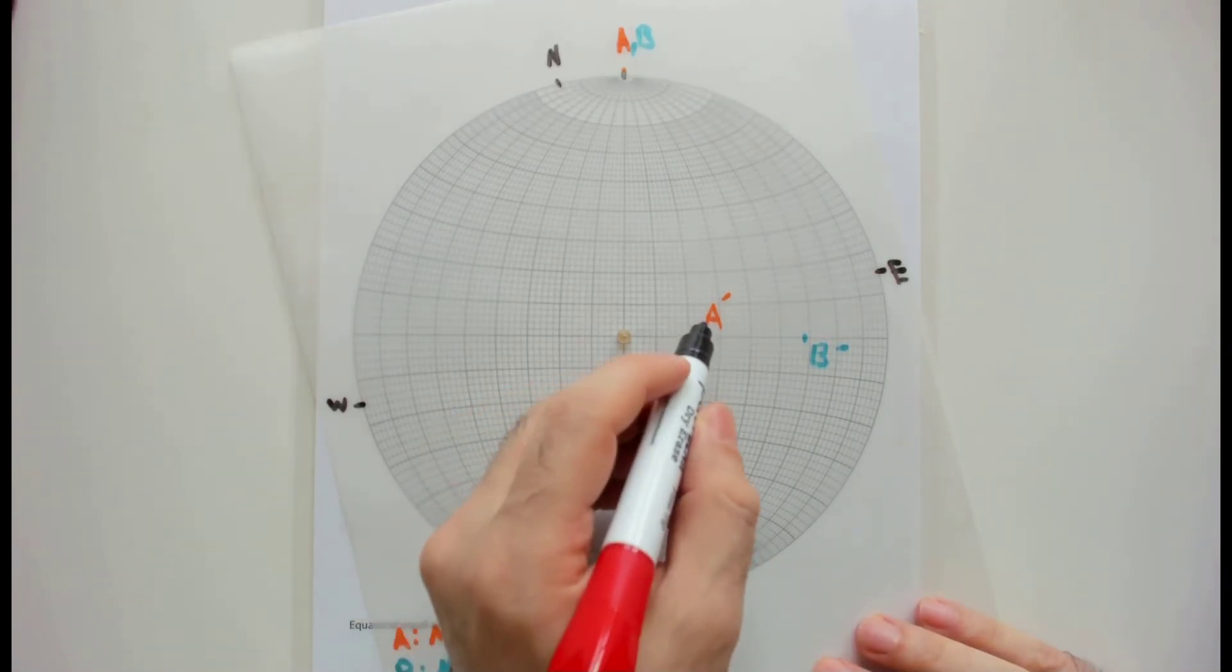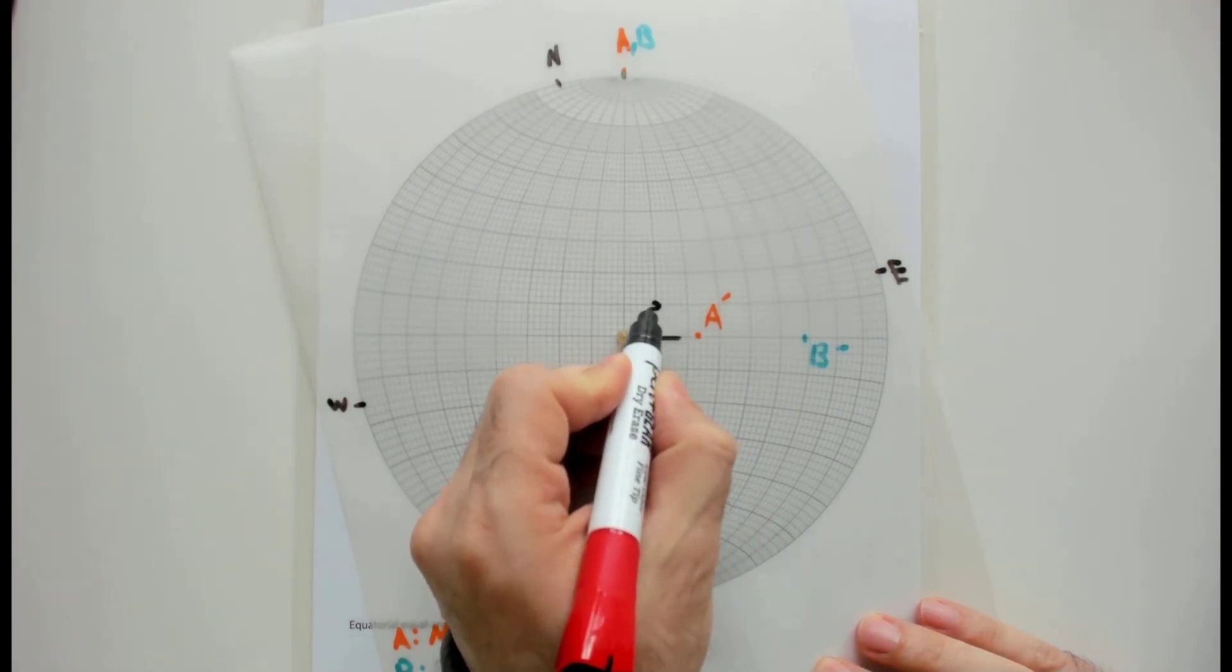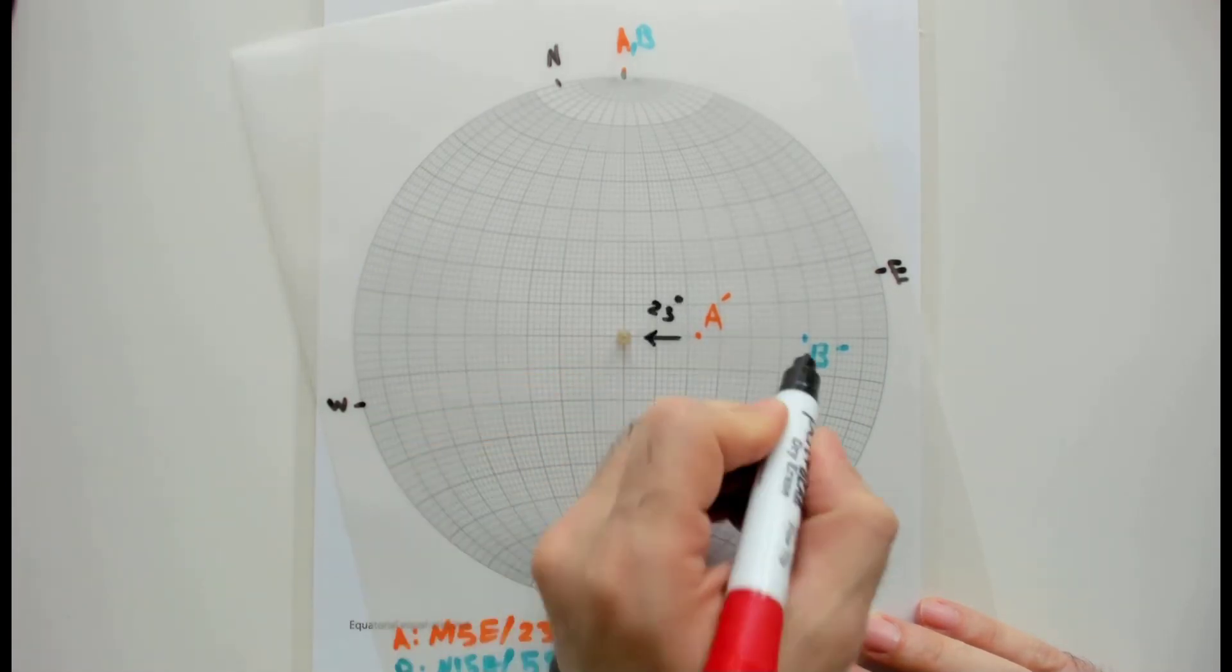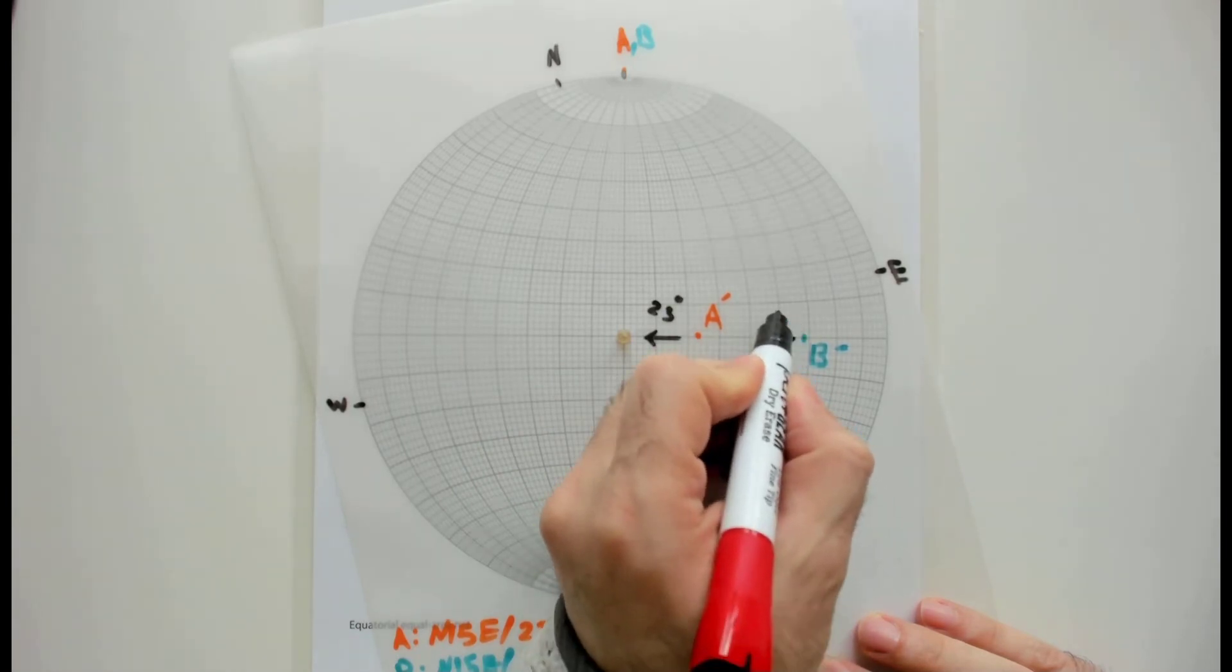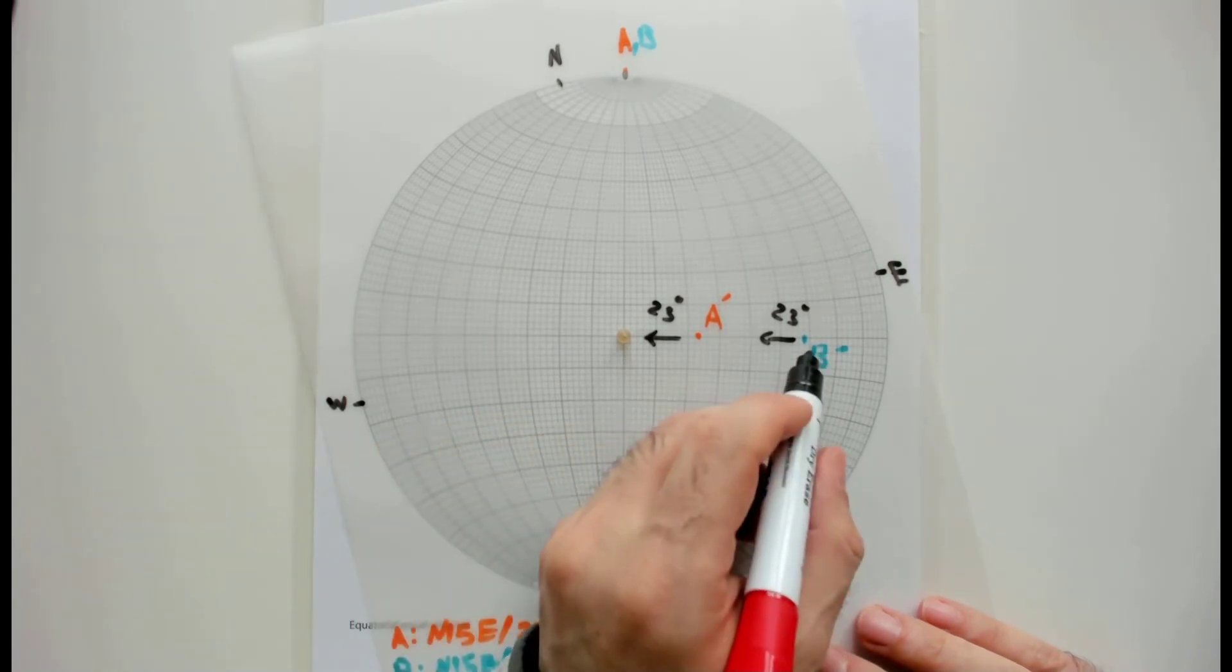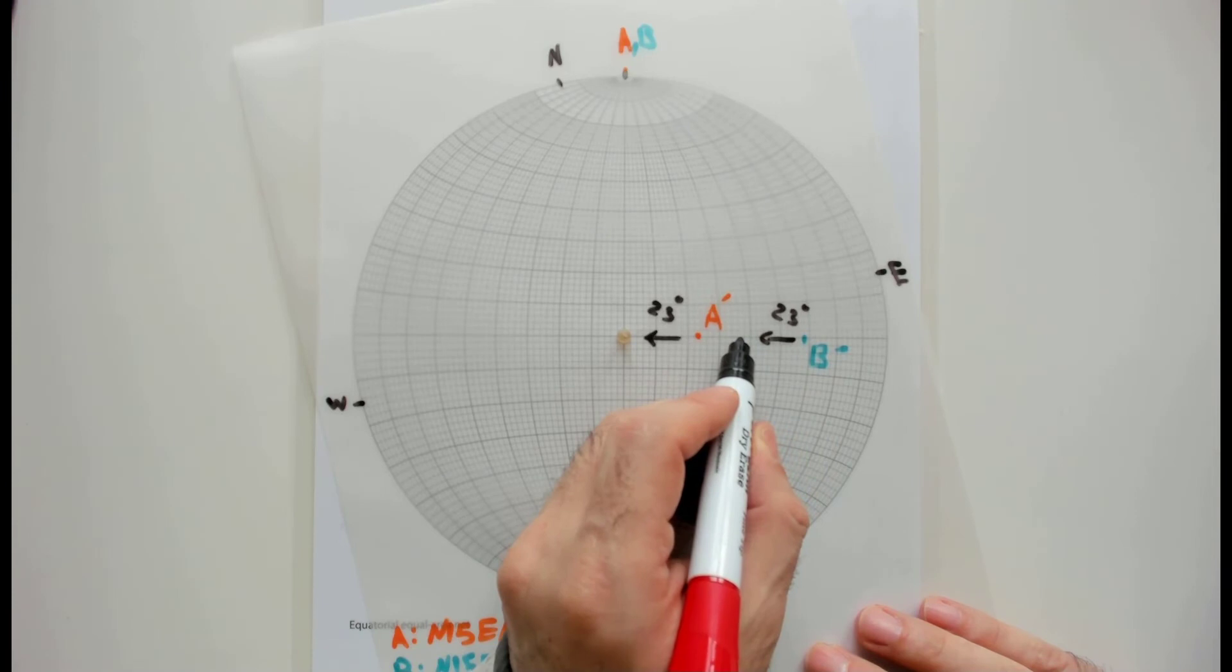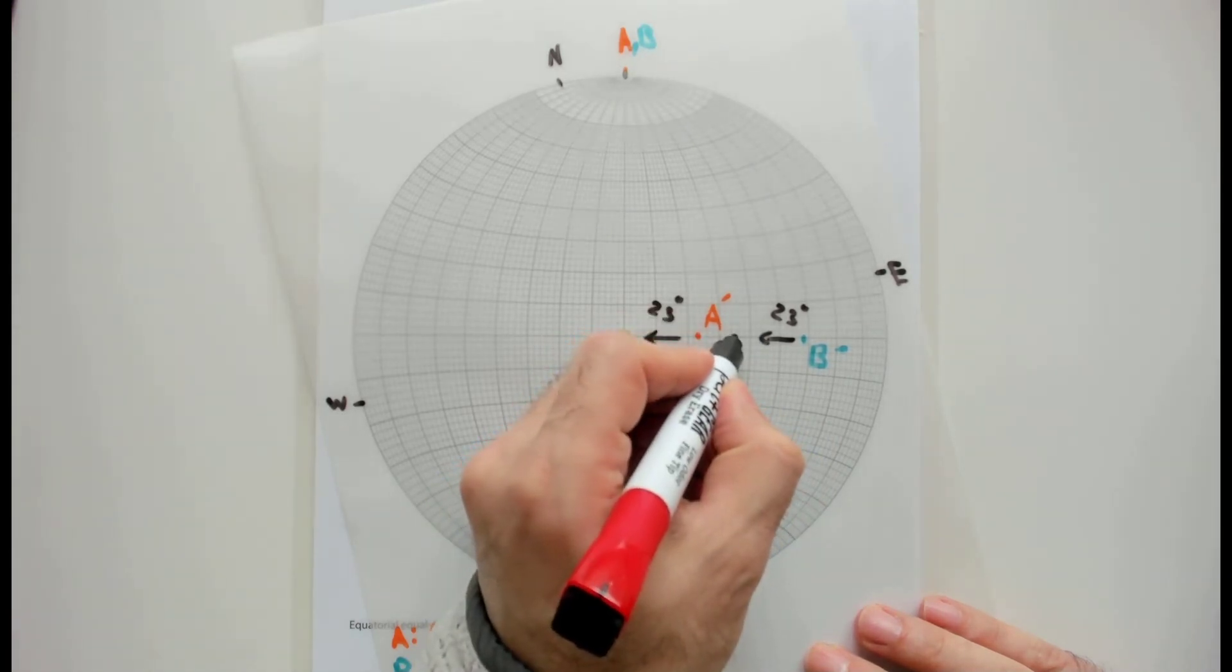You are going to push A prime to the center, 23 degrees, so you do the same for B prime. Let's count 23 from this point: so this is 8, 18, 20, 22, and 23.